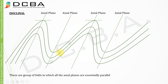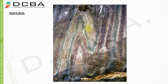Next, based on inclination, we have isoclinal folds — a group of folds in which all the axial planes are essentially parallel to each other. You can see these axial planes drawn through the hinge lines of the respective crests and curves are almost parallel. The word 'clinal' relates to inclination, as encountered earlier in crystallographic axes. You can see how the axial planes are almost parallel to each other.